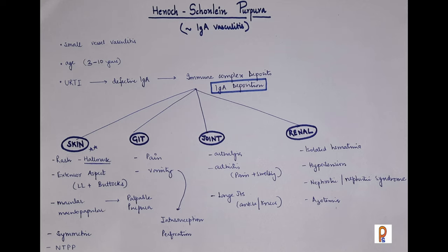When IgA deposition occurs in the joints, it leads to arthralgia and arthritis. It usually involves the large joints like ankle and knees, but usually leads to no residual deformity in the joints.